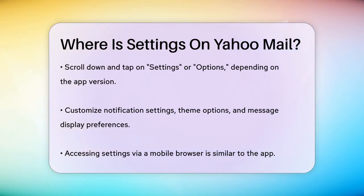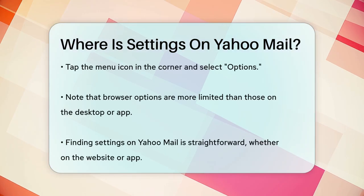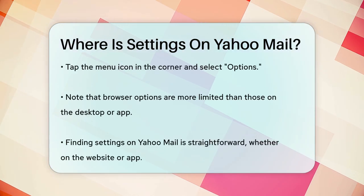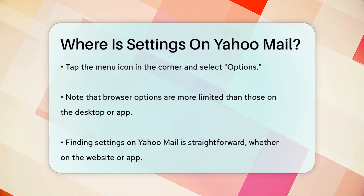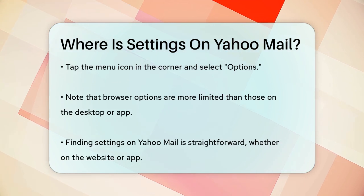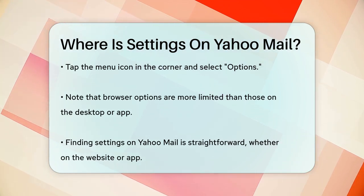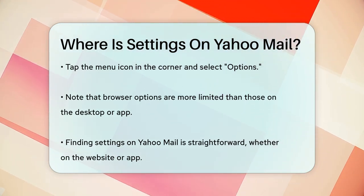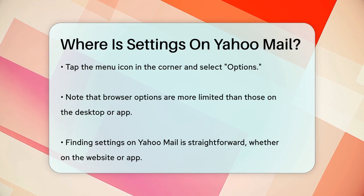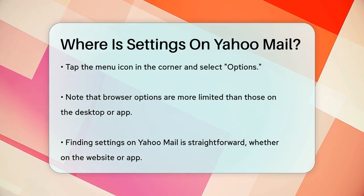For those who prefer using their phone's browser, accessing Settings is similar to the app — tap the menu icon in the corner and then select Options. However, the options available through the browser are more limited compared to using a desktop computer or the mobile app.